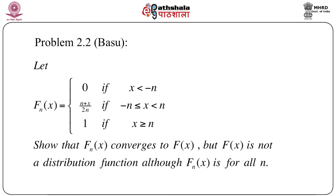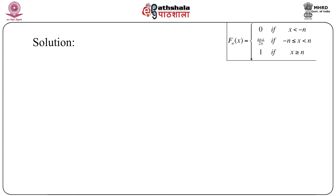The next very interesting problem concerns convergence in distribution. Let F_n(x) be a sequence of distribution functions defined as: 0 if x < -n; (n+x)/(2n) if -n ≤ x < n; and 1 if x ≥ n. Show that F_n(x) converges to F(x), but F(x) is not a distribution function, although each F_n(x) is. This is a very surprising result: a sequence of distribution functions converges to a function that is not a distribution function.